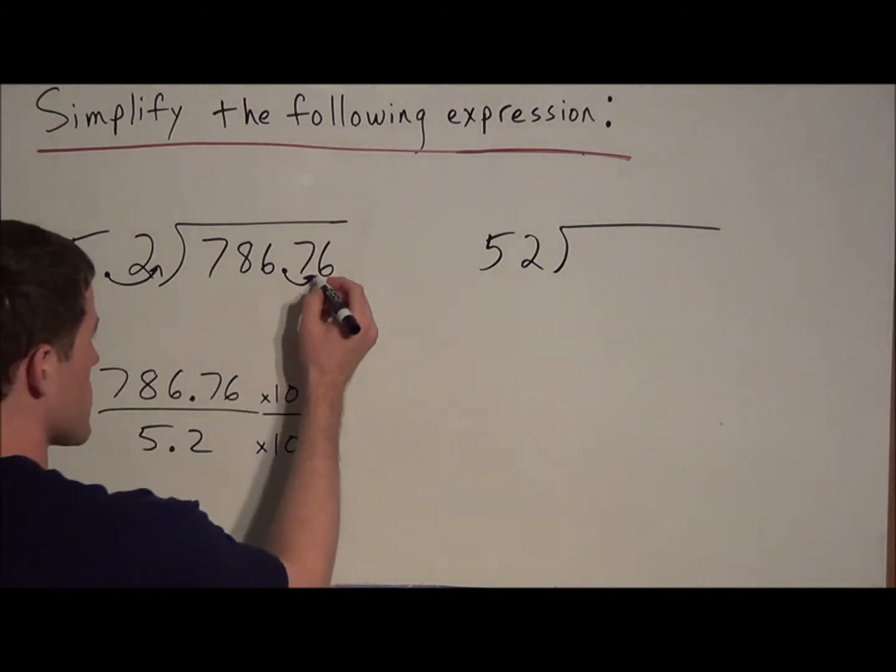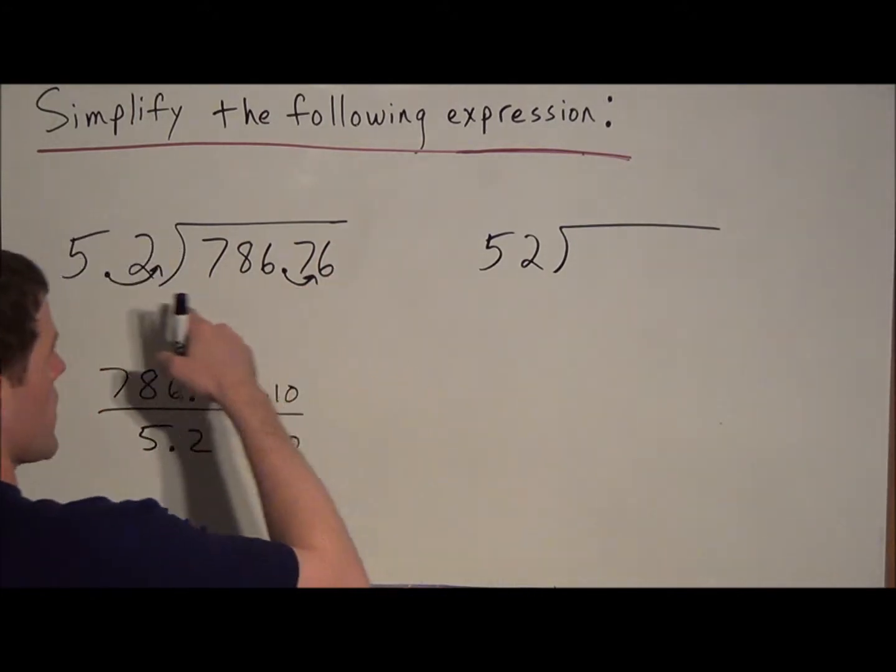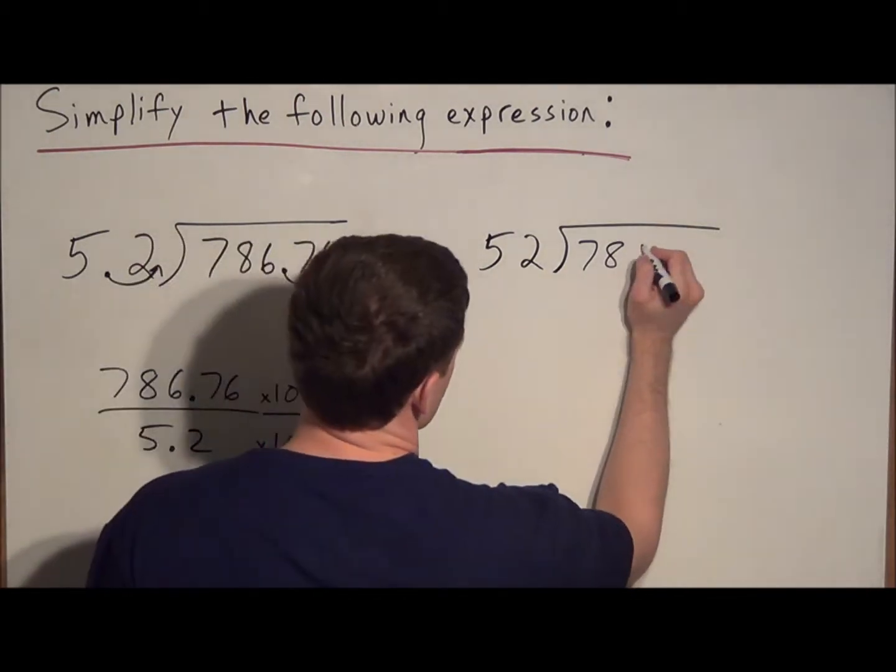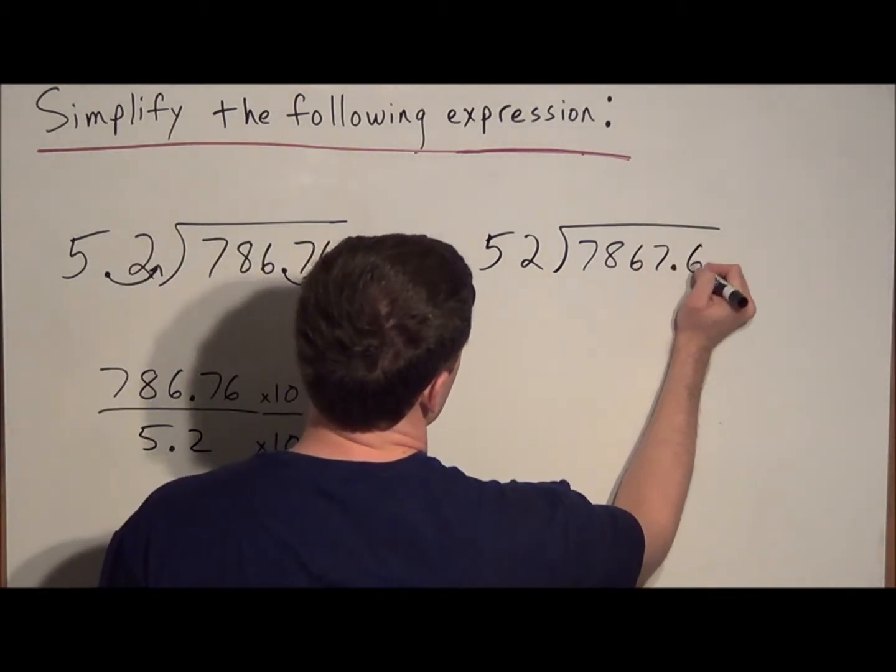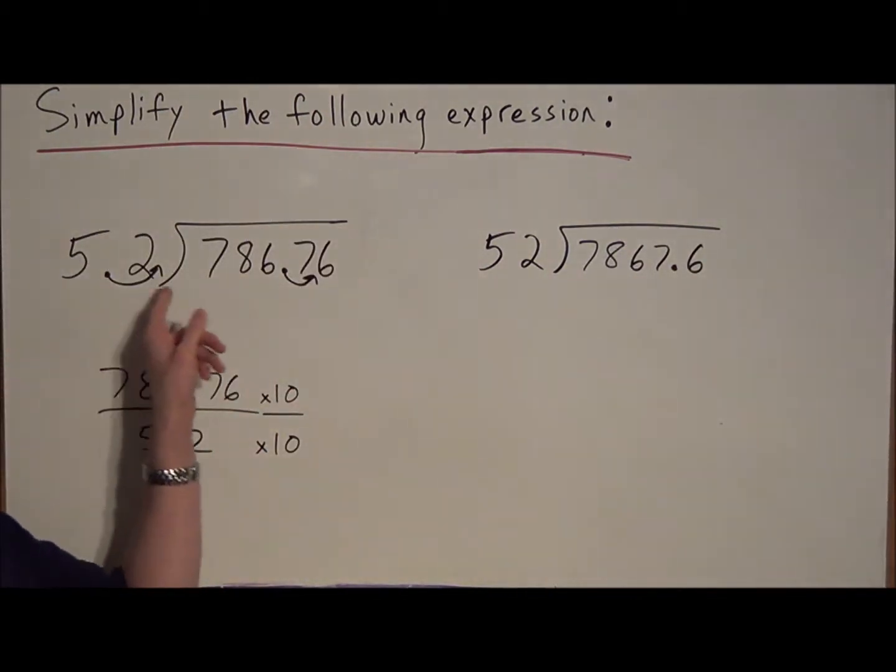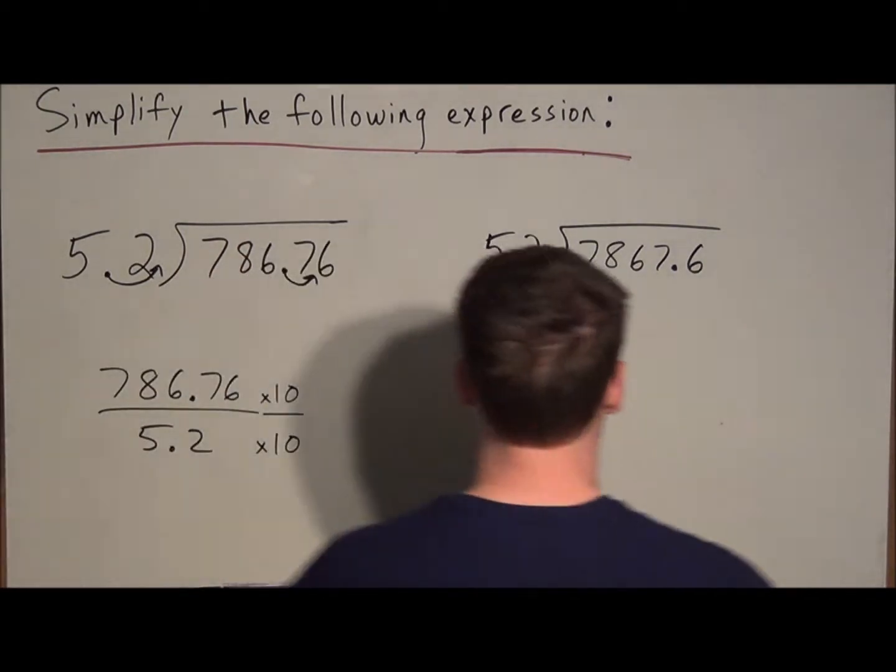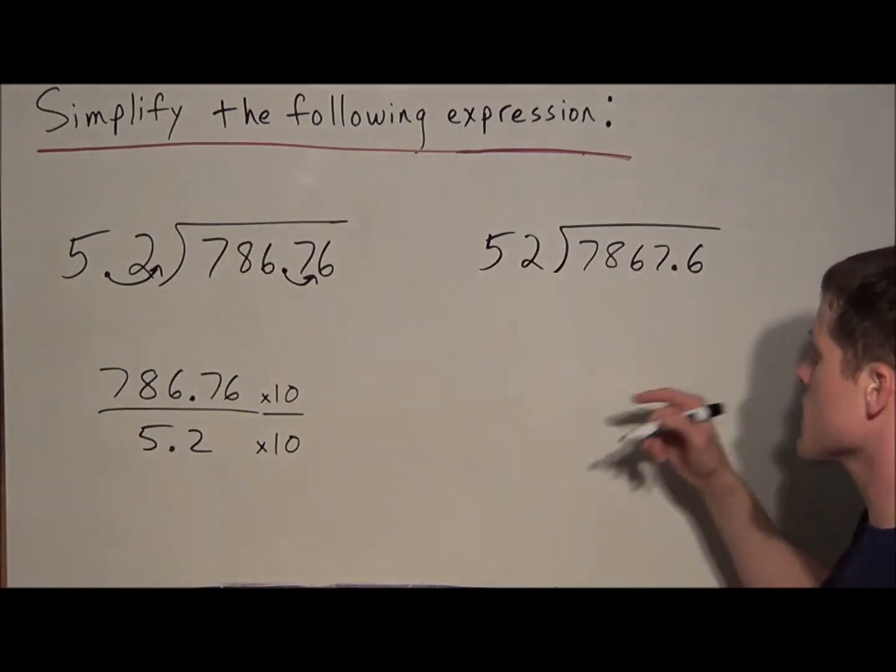So that means if we move this decimal one place over, we're dividing 52 into 7867.6. So all that happened was the decimal moved over once, and the reason why we could do it has a lot to do with equivalent fractions. Okay, but now that we have this, we're going to treat this like a division problem.